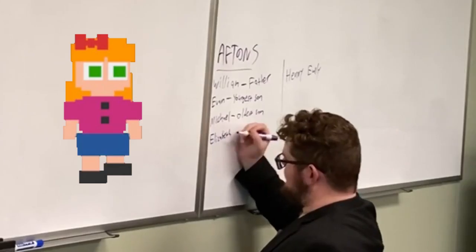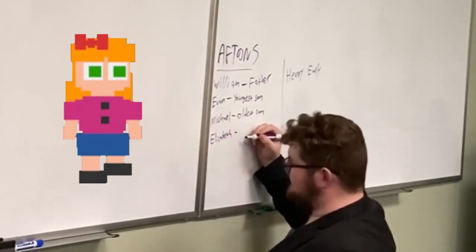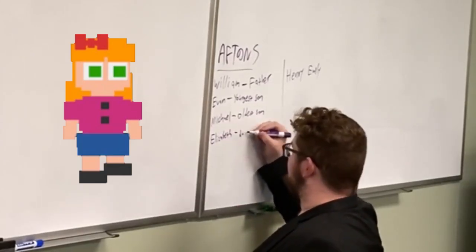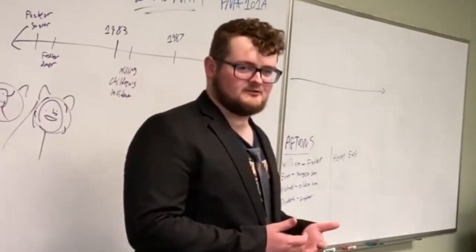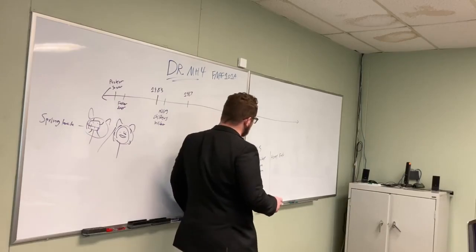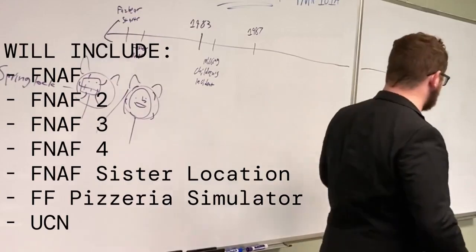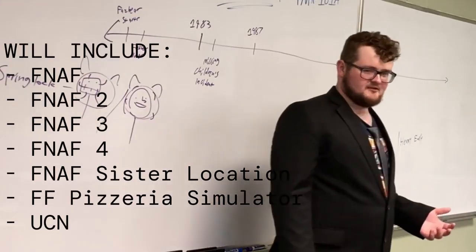But she isn't important right now, she will be very important later. And she is William's daughter. There's a lot of, we'll get to it when we get to it in this story. I should go ahead and mention that this timeline rundown will not go past the seventh game in the franchise.